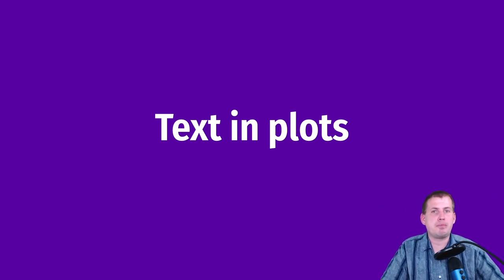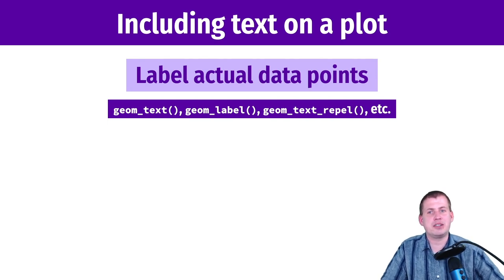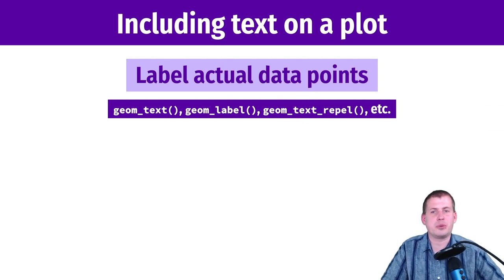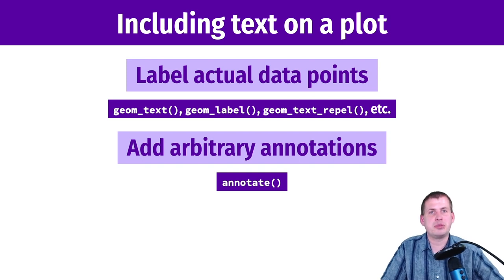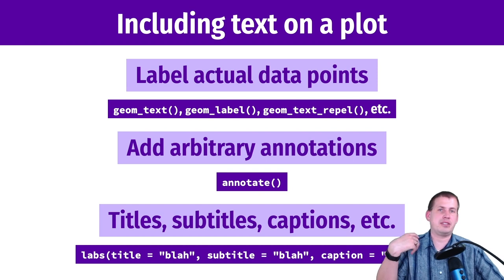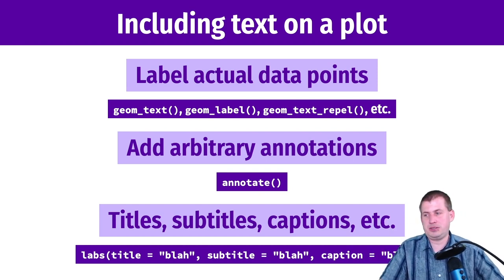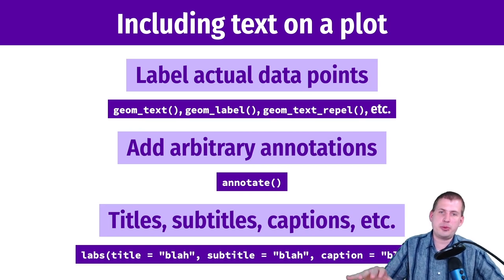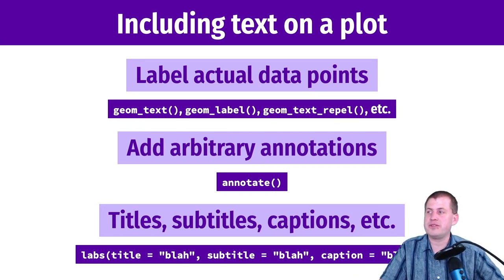There are three general ways to get text onto a plot. First, you can label the actual data points using geoms like geom_text, geom_label, geom_text_repel, and geom_label_repel. Second, you can add arbitrary annotations anywhere on a plot using the annotate function. Third — and you've had lots of experience with this — you can add labels, titles, subtitles, and captions using the labs function, where you specify subtitle, x, fill, and so on.